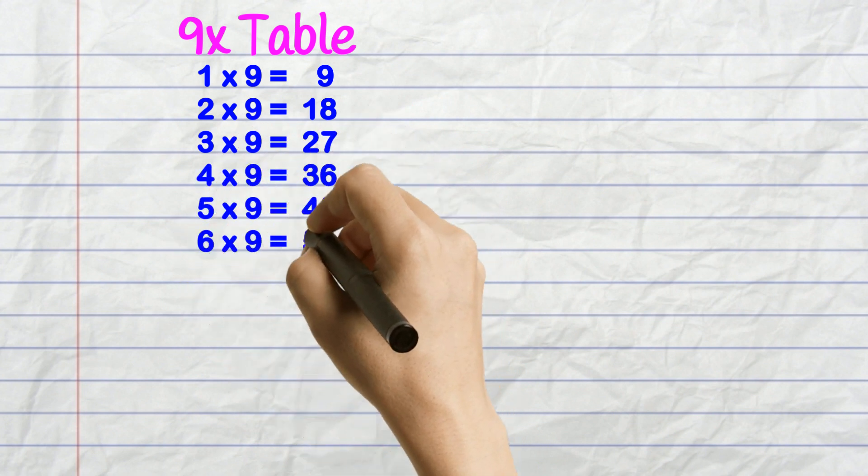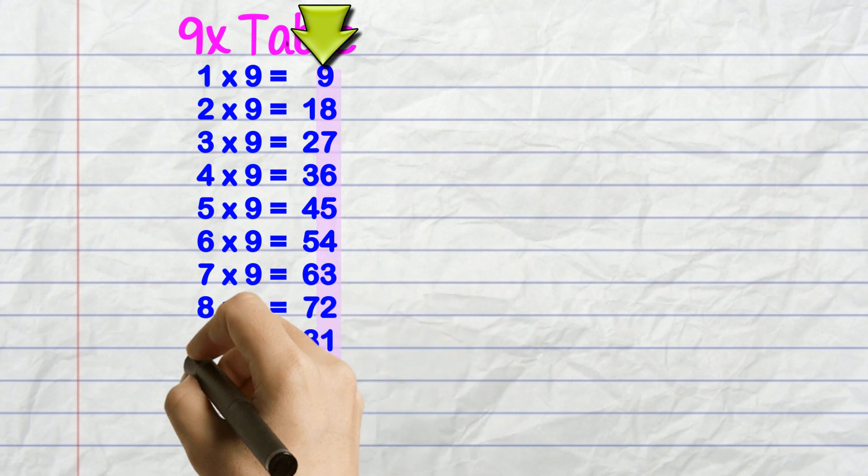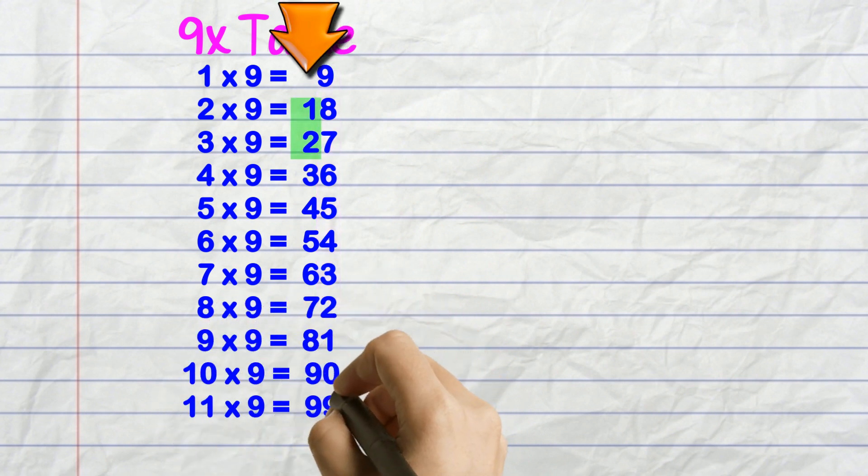I love the way that when you write it out you see the figures in the 1s column drop by 1 every line and in the 10s column, they rise by 1 every line.